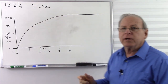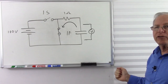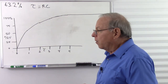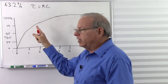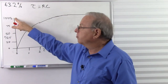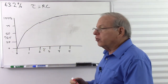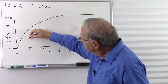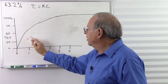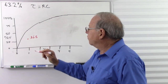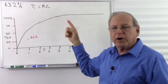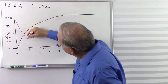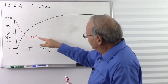Current flows back away from the capacitor through the resistor and the capacitor starts discharging. The voltage starts going down. After one time constant — instead of going up 63.2%, it goes down 63.2%. We start at 100 volts and lose 63.2%, leaving us with 36.8%. So after one time constant we're down to 36.8 volts.